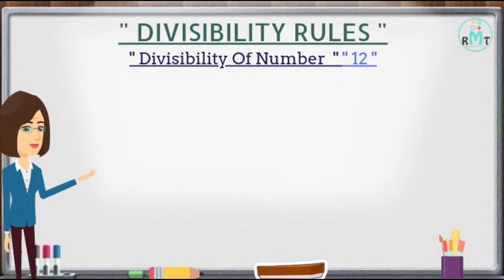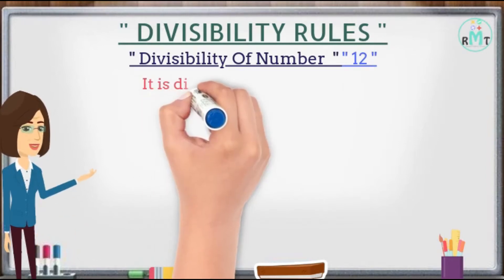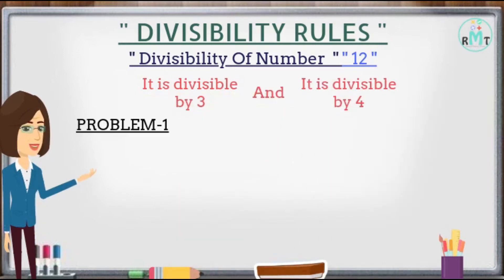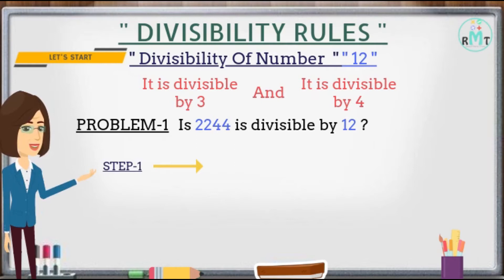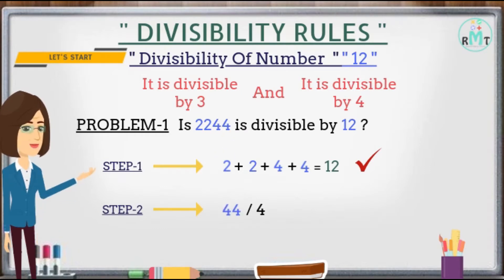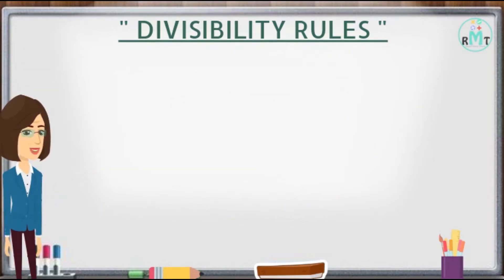Next we will check the divisibility rule for number 12: any number is divisible by 12 if it is divisible by both 3 and 4. Problem 1: Is 2244 divisible by 12? Step 1: We add the individual digits of 2244 and get 12, which is completely divisible by 3. Step 2: We divide the last 2 digits, 44, by 4 and get 11, which is also divisible by 4. Hence 2244 is completely divisible by 12.